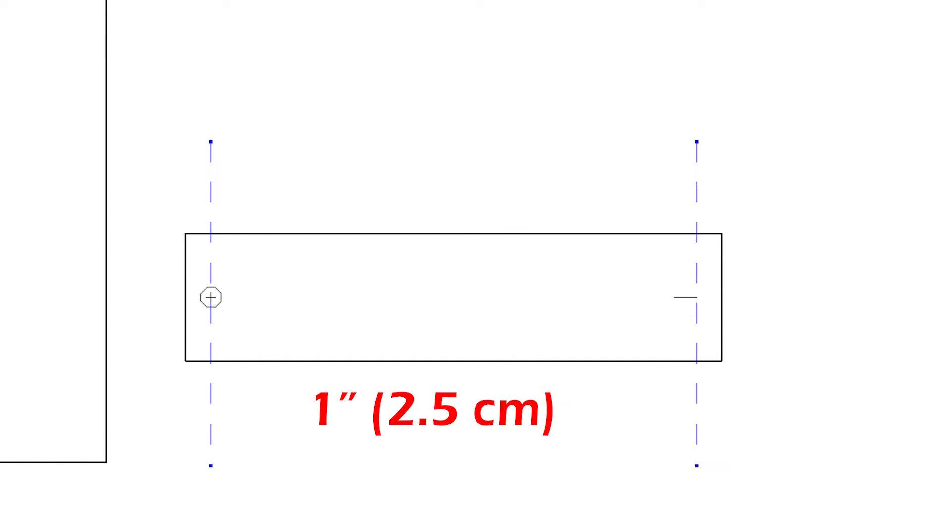Then, you need one inch extra for the button closure, half of an inch on both sides. Then, the cuff length should be ten inches and a half. So, this is the cuff: ten inches and a half length and two inches and a half height.